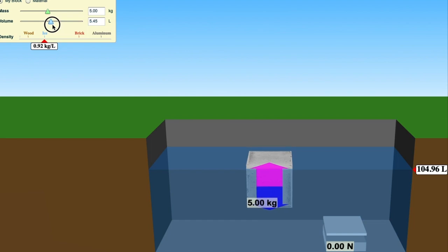So if I now reduce the volume so that we are getting what we know is ice, which is around 0.92 kilograms per liter, it's saying that we have here 92% of the ice is sitting below the water level, but it still displaces five liters.